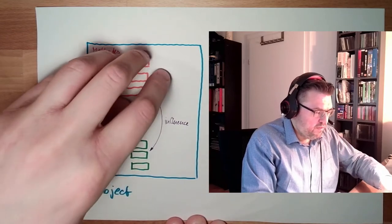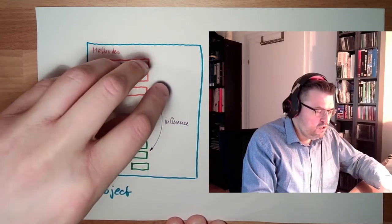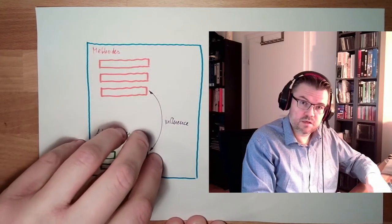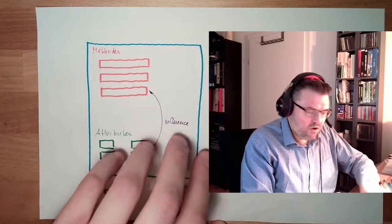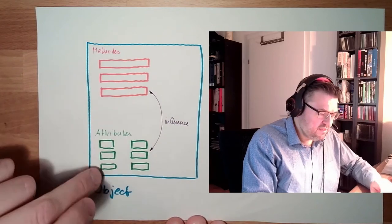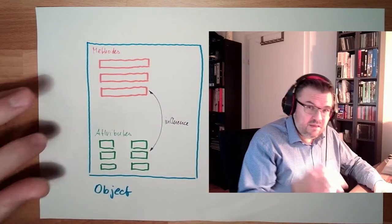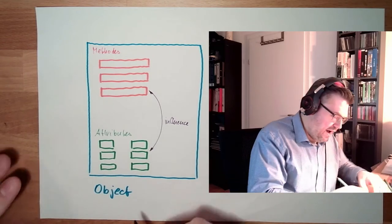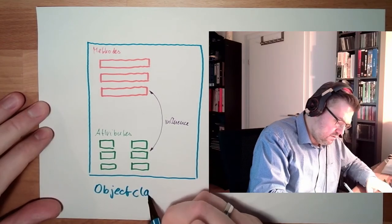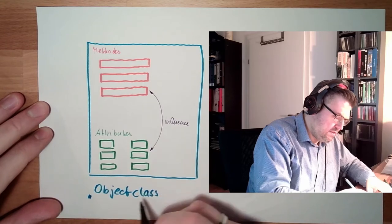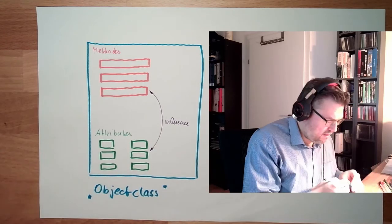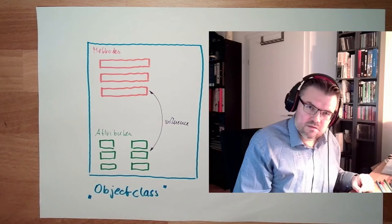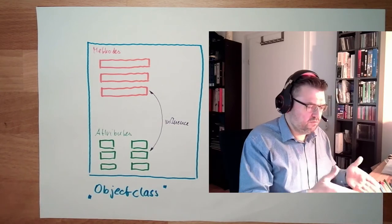And these methods are functions, procedures, something like this, which belong to this object. So this is not the object itself. This is describing the data type of the object or the so-called object class. This is the object class. Object class is nothing more than a complex data type. It's called object class. It's a class of the object.